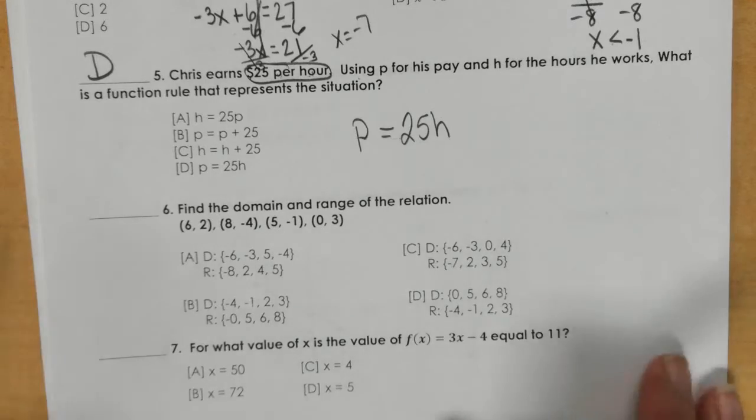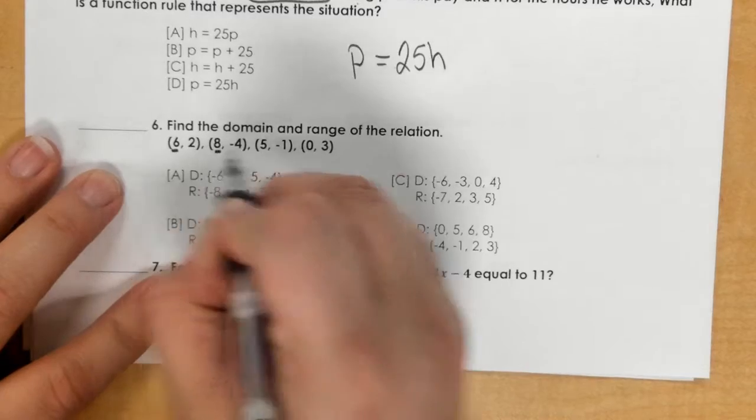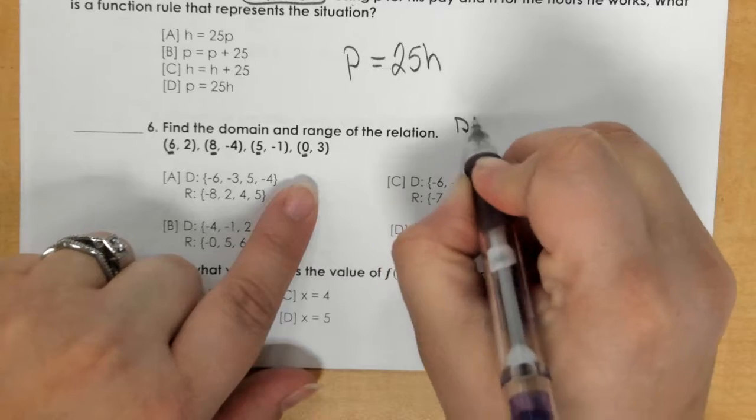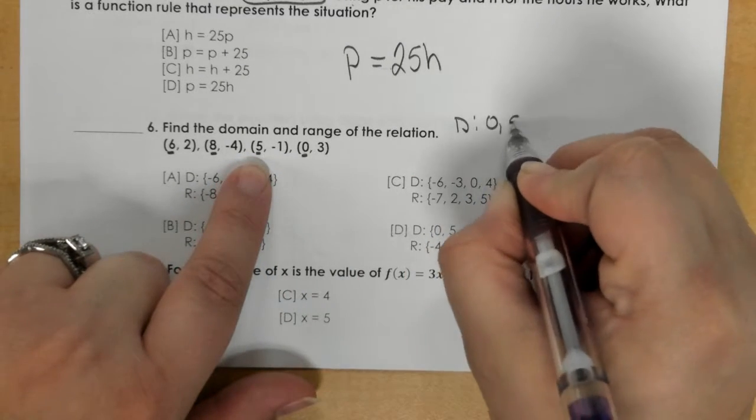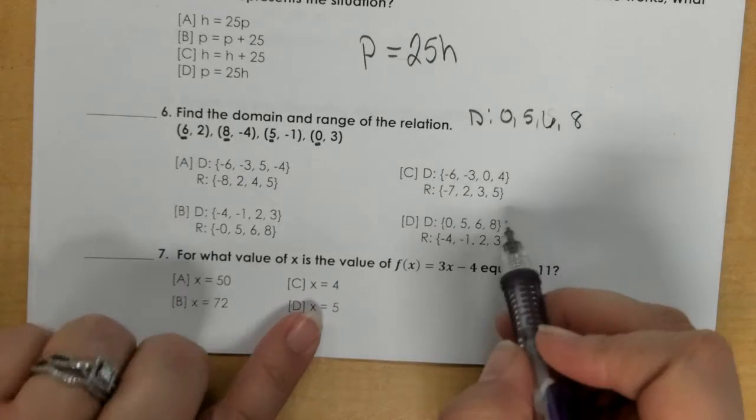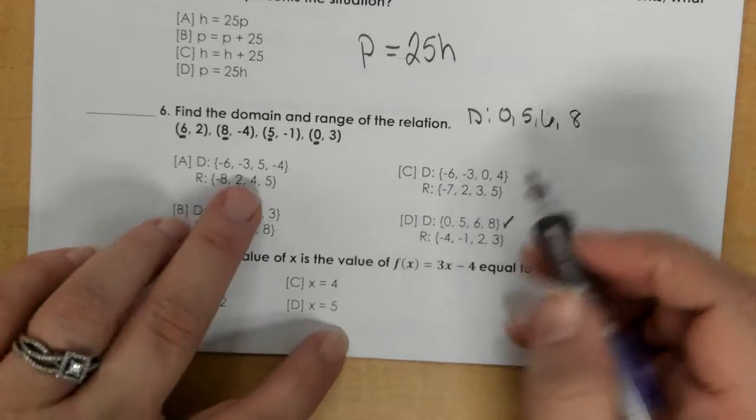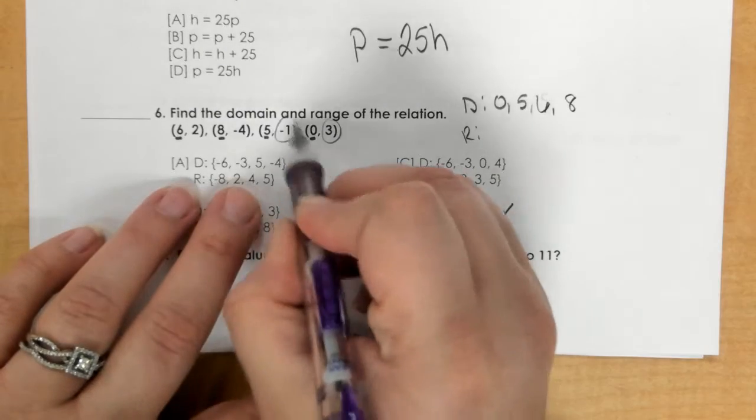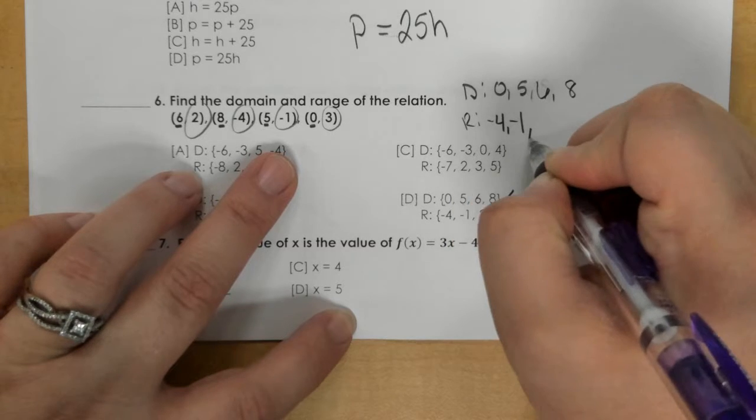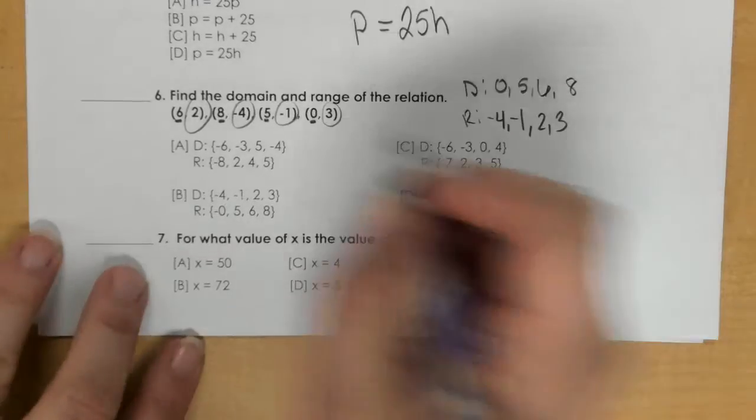In number 6 you're looking at domain and range. Domain would be the first numbers, your x's, and they need to be in order from least to greatest. So my domain would be 0, 5, 6, 8, and then my range would be the y values: negative 4, negative 1, 2, 3. So that looks like that one, and D has to be the solution there.